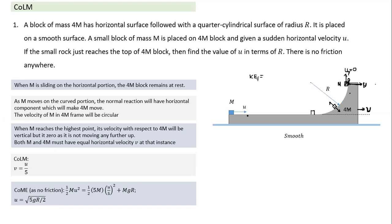As per conservation of mechanical energy, the initial energy (1/2)mU² equals the total final energy: (1/2)(5m)(u/5)² for horizontal kinetic energy plus mgR for potential energy. From this we can find the required minimum velocity u. I hope all of you paid attention and understood these problems. That was the last question intended for today.